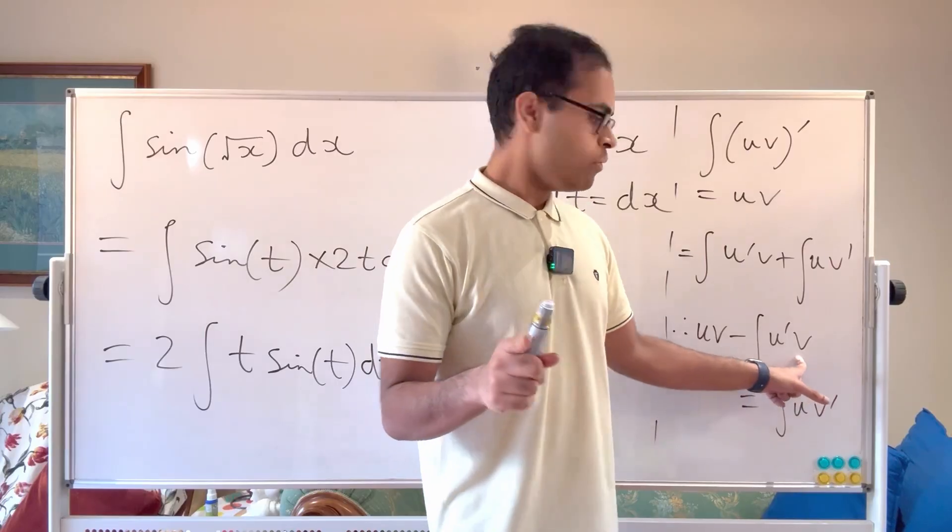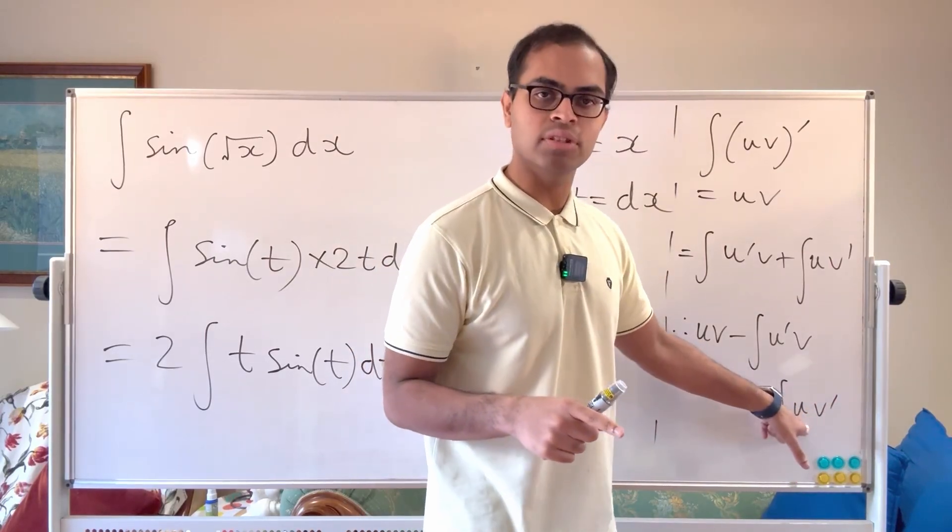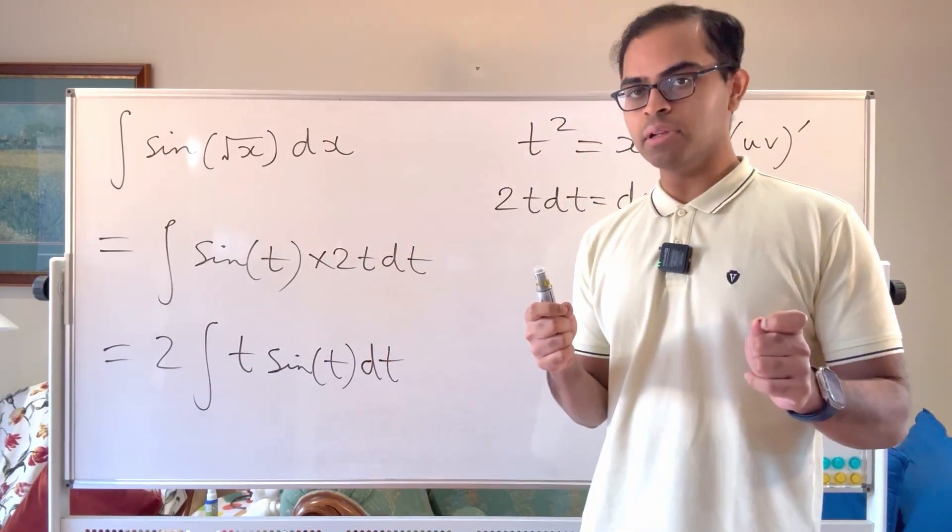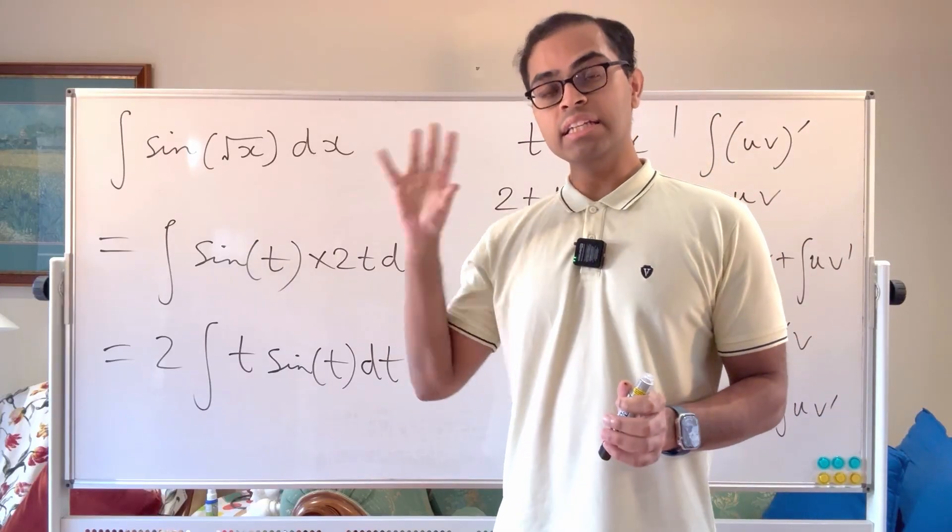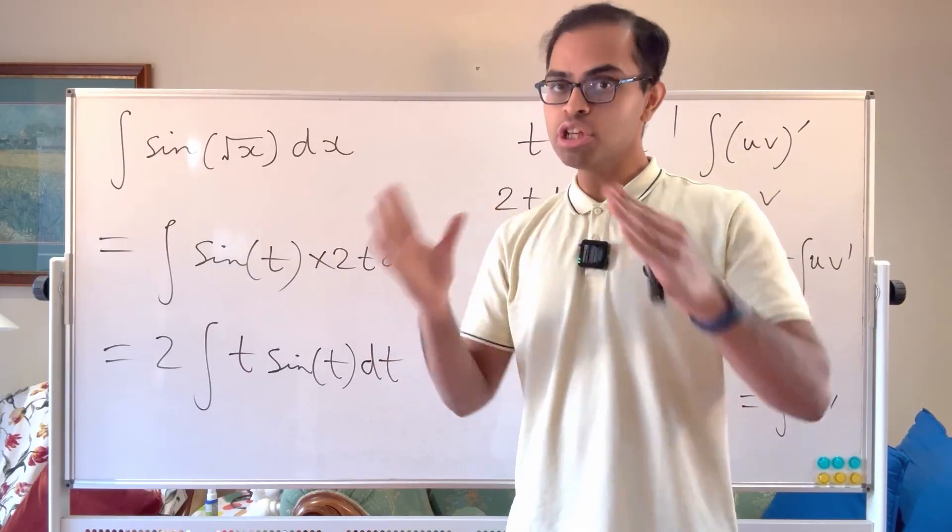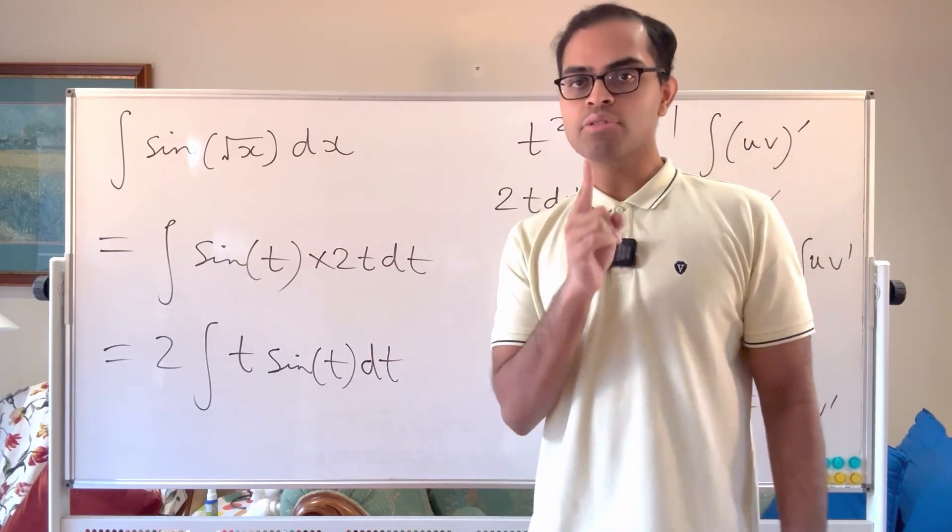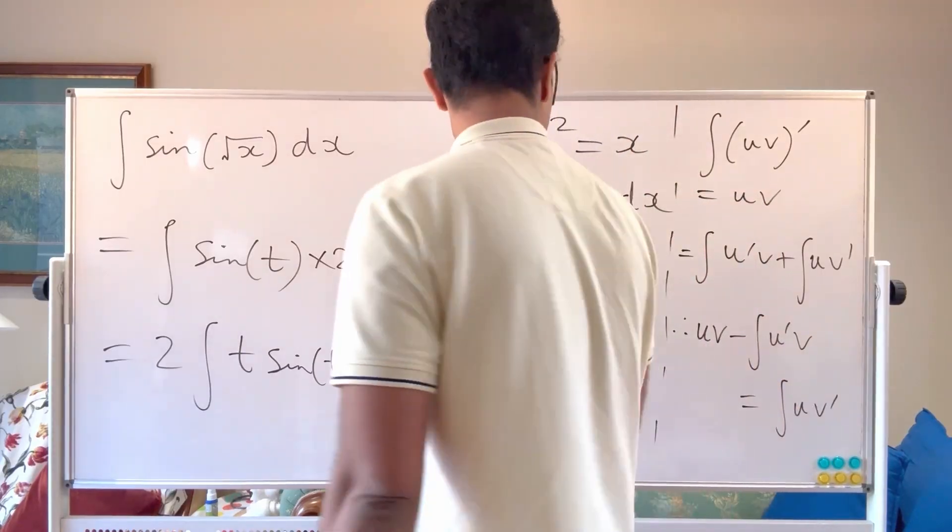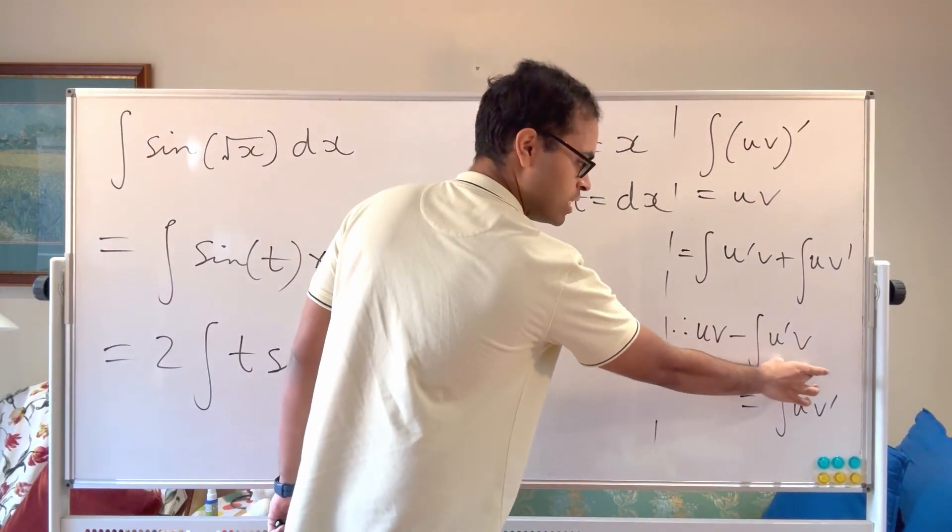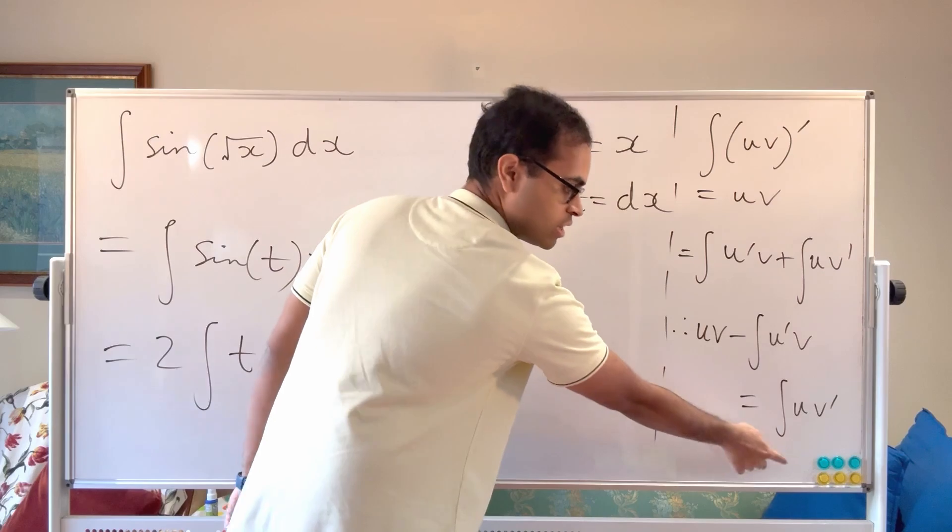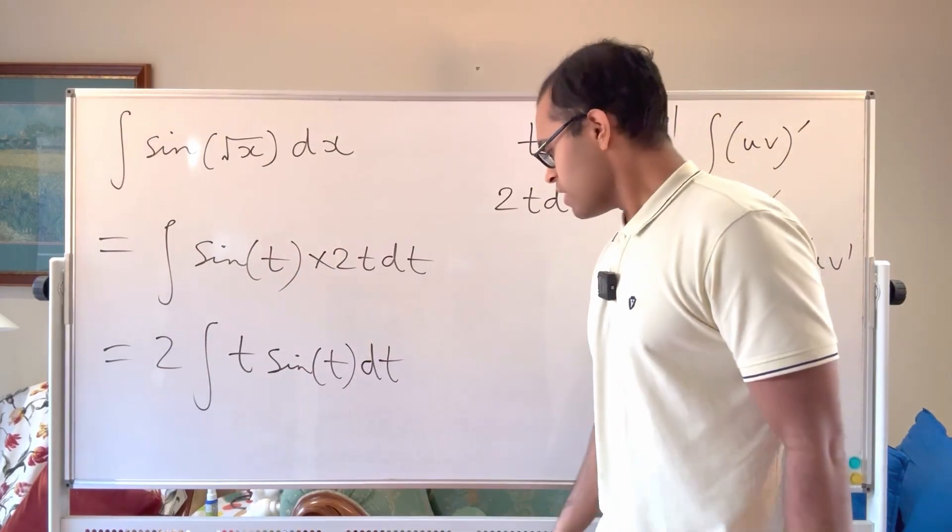Basically, when you have an integral that's a product of two things, differentiating one thing could make it simple at the expense of integrating the other part, that shouldn't make it too complicated. And then you can do integration by parts, because then you can find out what this quantity is. And therefore, this difference and therefore the original integral.